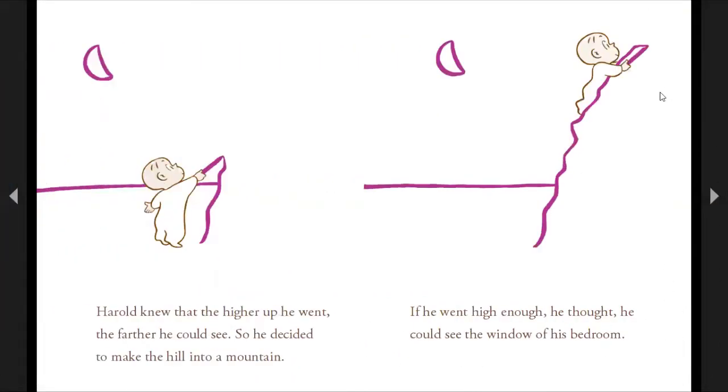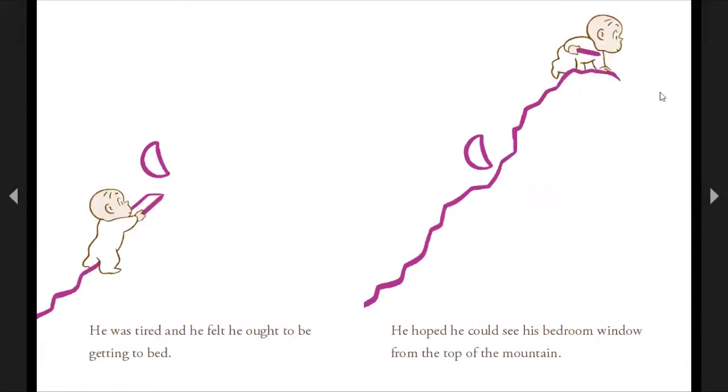Harold knew that the higher up he went, the farther he could see. So he decided to make the hill into a mountain. If he went high enough, he thought he could see the window of his bedroom. He was tired and he felt he ought to be getting to bed. He hoped he could see his bedroom window from the top of a mountain.